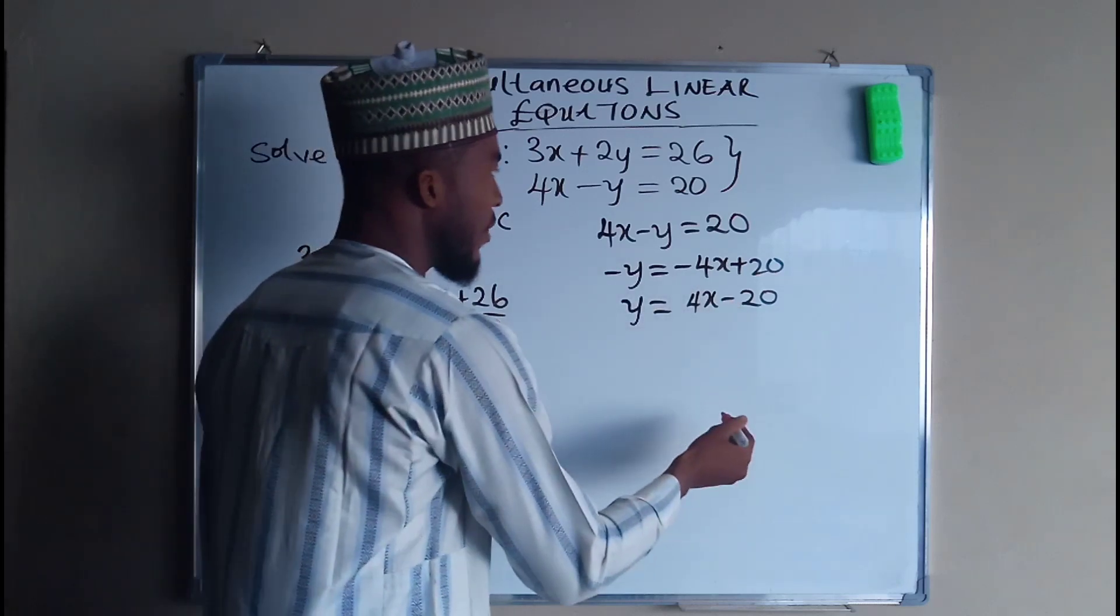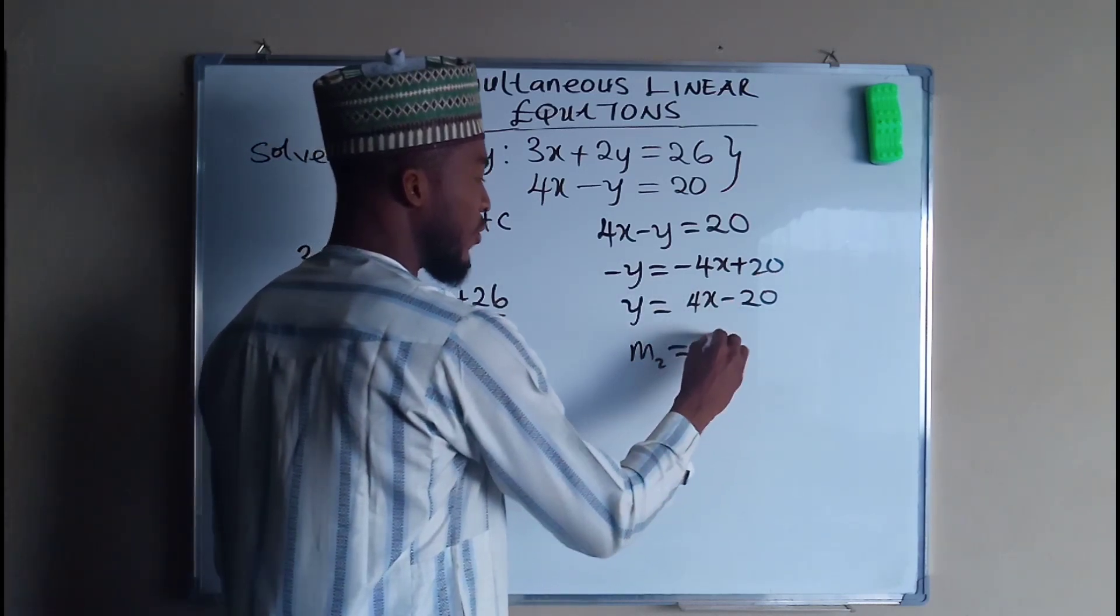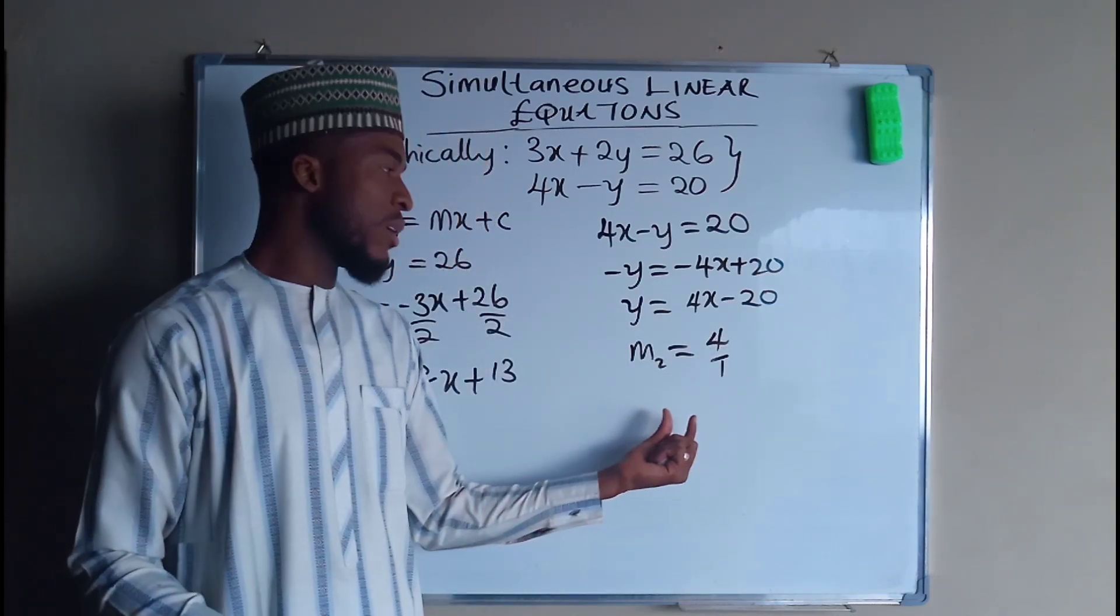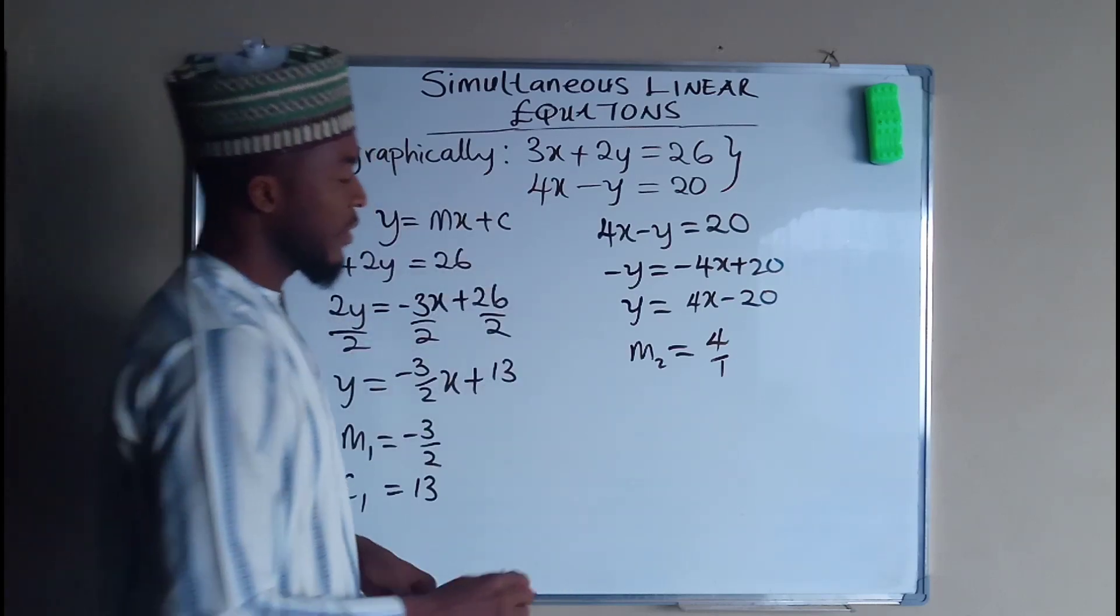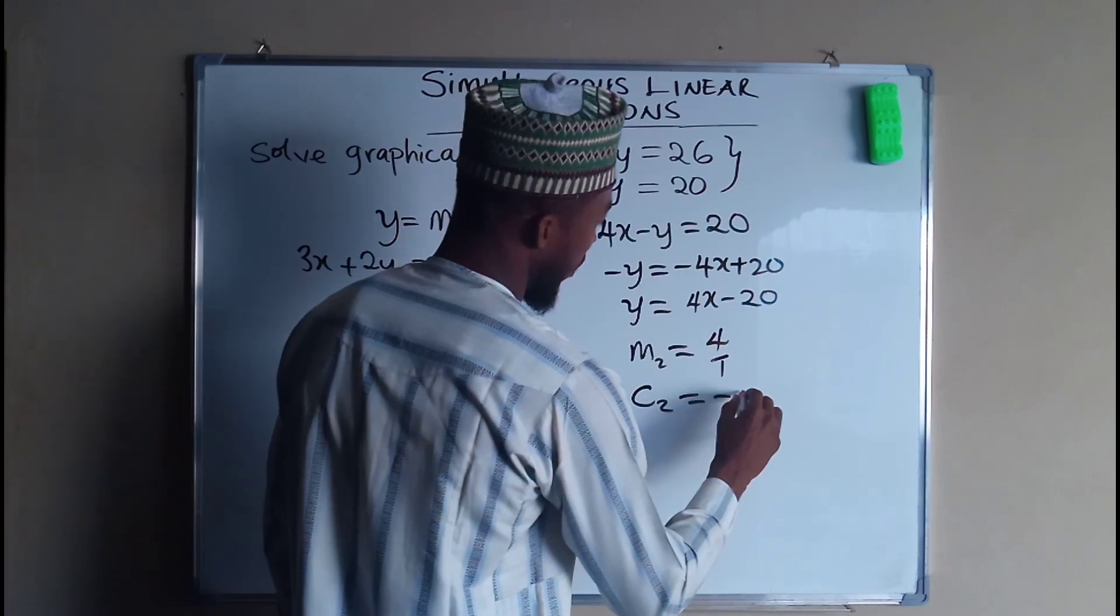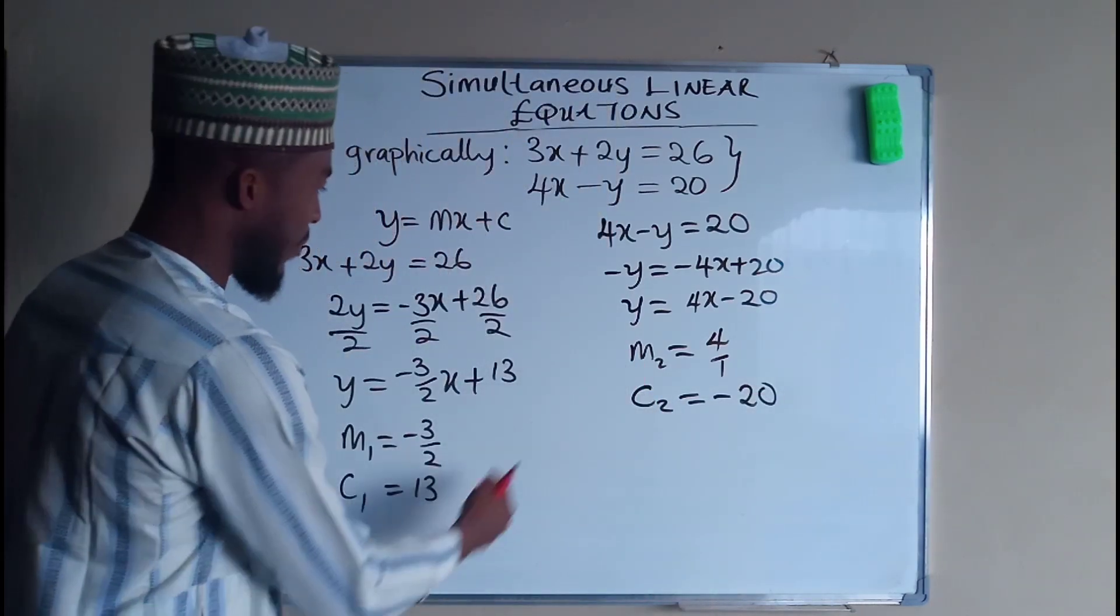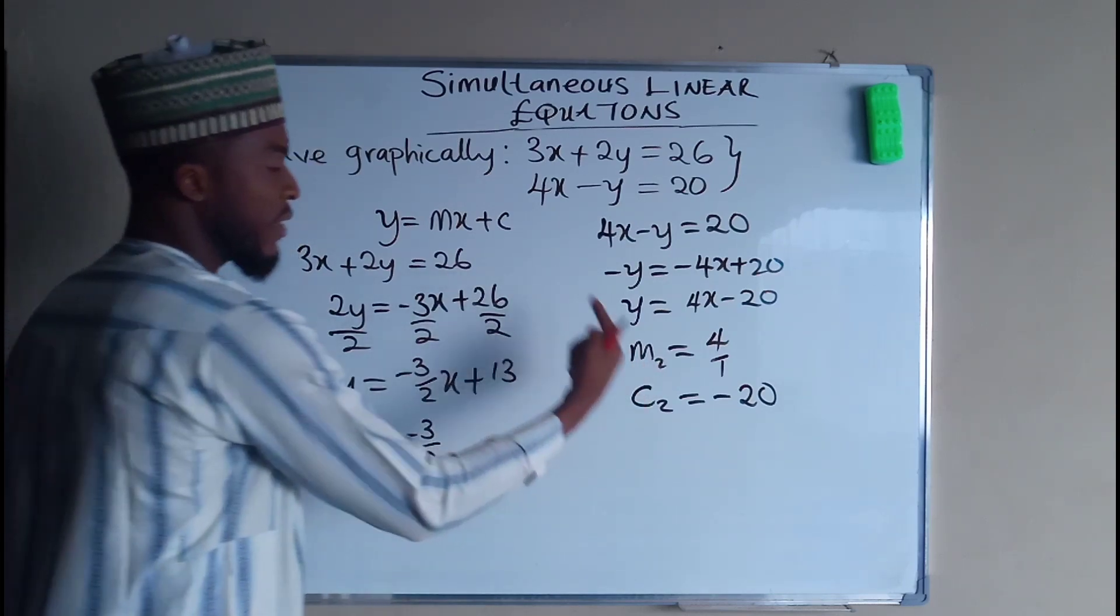So in this second equation, we have our m2 to be equals to 4 divided by 1 because we need our slope to always be in a rational form before we can plot it. And c2 is equal to negative 20. So these are the 4 terms we need: m1, m2, c1, and c2.